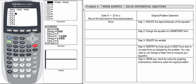The first step is to isolate the exponential part of the equation. 3 to the x is the exponential part. The exponential part is isolated if there's nothing multiplied by it or added to it. So we are done for step 1.